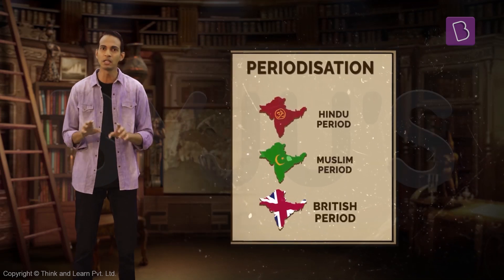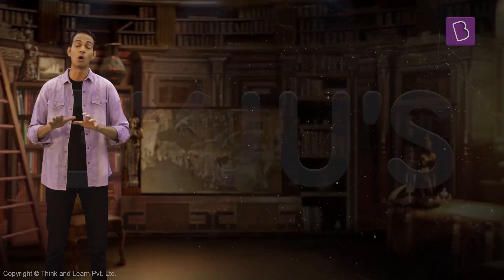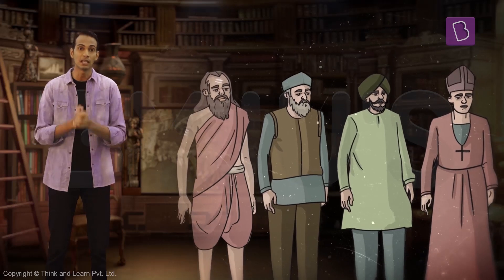But you shouldn't periodize history based on the religion of the ruler. Why? Well, not all the rulers were of the same faith at any point. And besides, the religion of the rulers doesn't dictate the religion of a period. During all these times, there were people from all faiths living together in the Indian subcontinent. A lot of historians felt that this religious division of history doesn't capture the essence of periodization. So they came up with a different way of periodization.